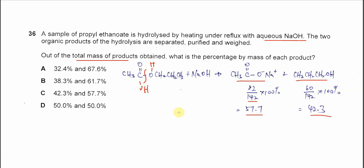Okay, so answer now is quite obvious. C, 42.3 and 57.7. So this is the percentage by mass of each product. Okay, that's all. Thank you.